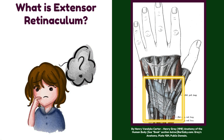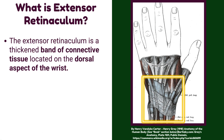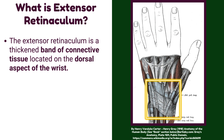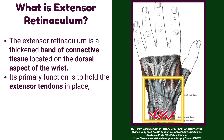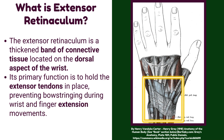What is extensor retinaculum? The extensor retinaculum is a thickened band of connective tissue located on the dorsal aspect of the wrist. Its primary function is to hold the extensor tendons in place, preventing bowstringing during wrist and finger extension movements.